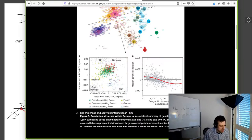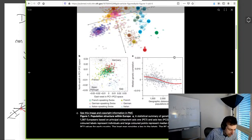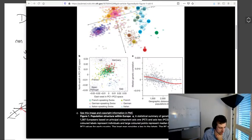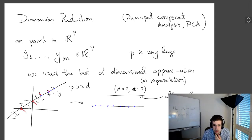Again, there's a lot of pre-processing — you can't just throw it in PCA like that, but almost. I'll put a reference to this paper. It's called 'Genes Mirror Geography within Europe,' and it's extremely famous if you Google it.